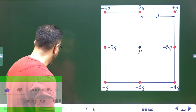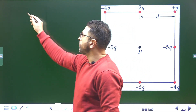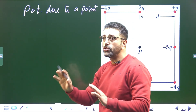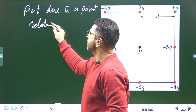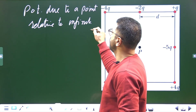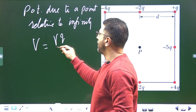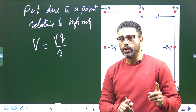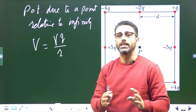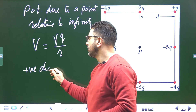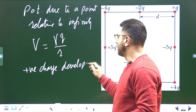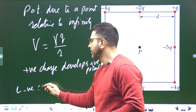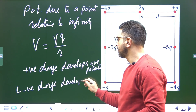You must all be aware that the potential due to a point charge, related to infinity, is V equals gamma Q divided by r. Gamma is the electrostatic constant — you can also write it as 1 over 4 pi epsilon-zero. Potential is a scalar quantity, not a vector quantity. It can be positive as well as negative: a positive charge develops positive potential, and a negative charge develops negative potential.